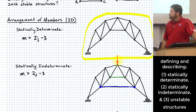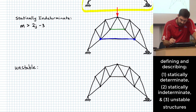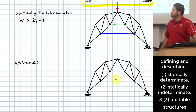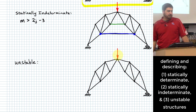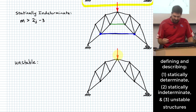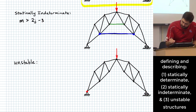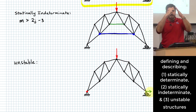We have another category beyond statically indeterminate. What happens if I go to the same structure and remove a member without replacing it, then try to load it? This end will hold steady but the other end becomes like a skateboard — it's going to swoosh out to the side and the thing is going to fall down.